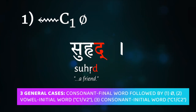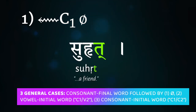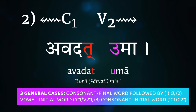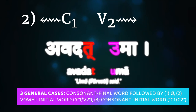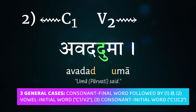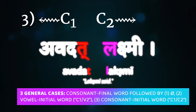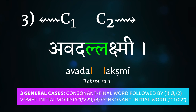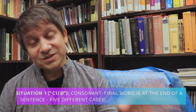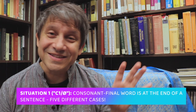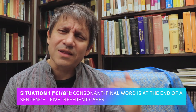There are going to be four general situations in consonant sandhi. First, we can look at what happens when a consonant is in the absolute final position at the end of a sentence. Second, what happens when a word ending in a consonant C1 is followed by a word that starts with a vowel V2. Then we'll look at C1-C2 situations where a word ends in C1 and is followed by a word that starts with another consonant C2.